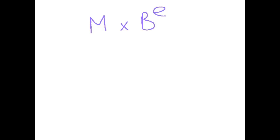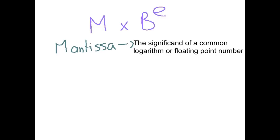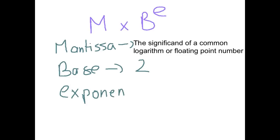When we store floating point numbers in the computer, we break it down into a different structure: m times b to the e, and from that we form a word in binary that is the representation in the computer. The m stands for mantissa, which is the significand in a common logarithm or floating point number. The b is the base, so if we're dealing in binary that will simply be 2. The e is the exponent, and that will make more sense as we go into the following explanation.